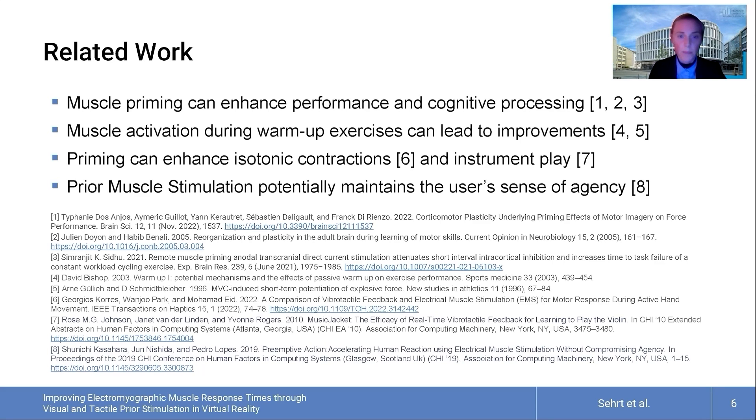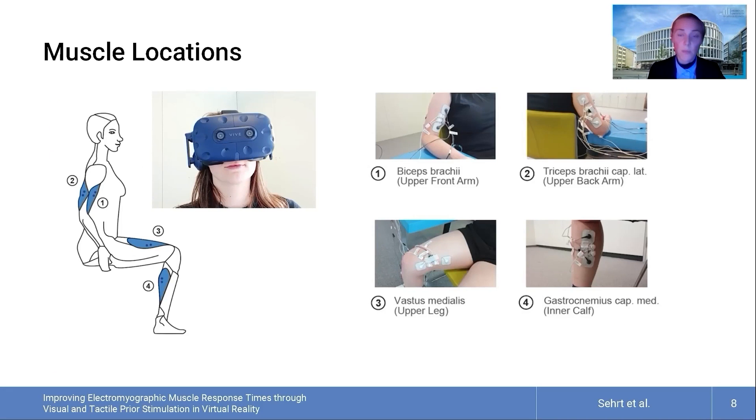Additionally, the impact of these factors on muscle reaction time, vital for hands-free, real-time interactions, remains unclear. Whether such prior stimulation using visual or tactile cues can help reduce the time to perform isometric muscle contractions was therefore tested at four different target muscles, which were biceps, triceps, upper leg and calf.